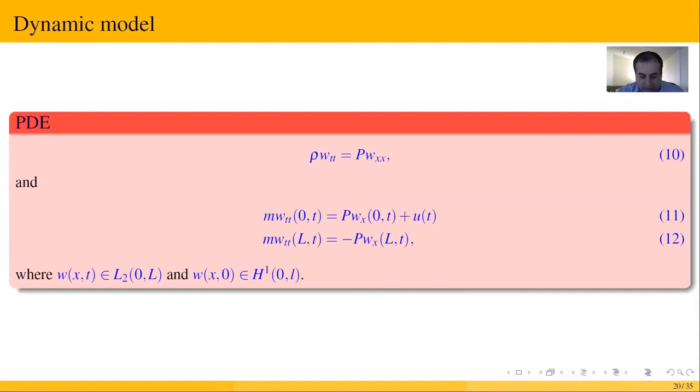The hyperbolic partial differential equation represents the dynamics of the snake as a string equation with a free end and an actuation at the other end, specified by the boundary conditions.